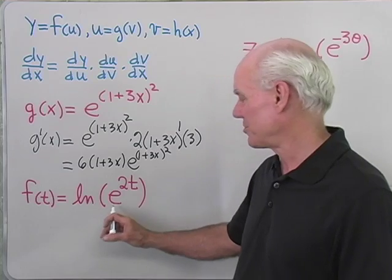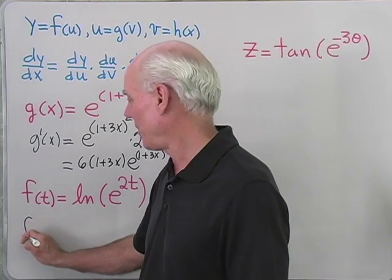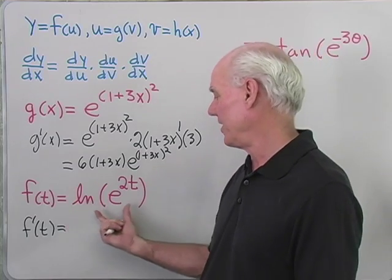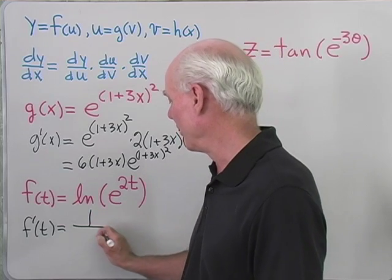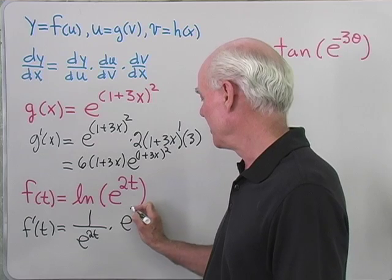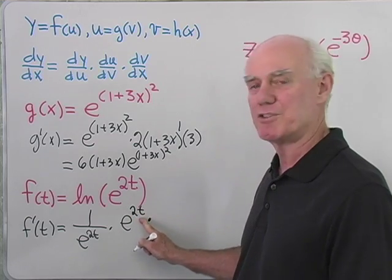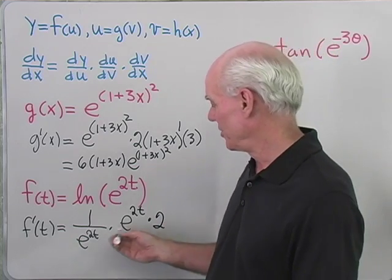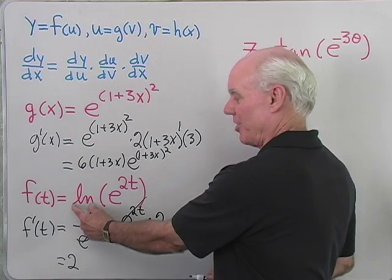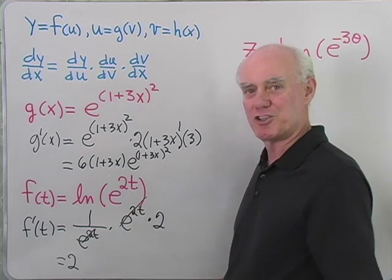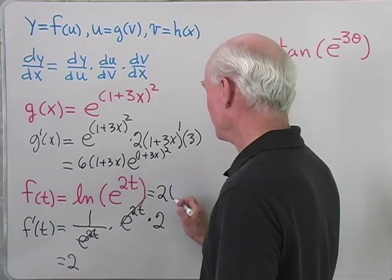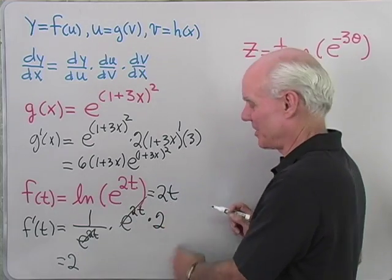Suppose f of t is natural log of e to the 2t. Then f prime of t — the derivative of f with respect to t — is the derivative of log of e to the 2t, which is 1 over e to the 2t, times the derivative of e to the 2t, which is e to the 2t, times the derivative of 2t, which is 2. The e to the 2t terms divide out and this just becomes 2. That makes sense because the logarithmic and exponential functions are inverses of each other, so natural log of e to the 2t really is just 2t, and the derivative of 2t is 2. This confirms we're applying the chain rule correctly.